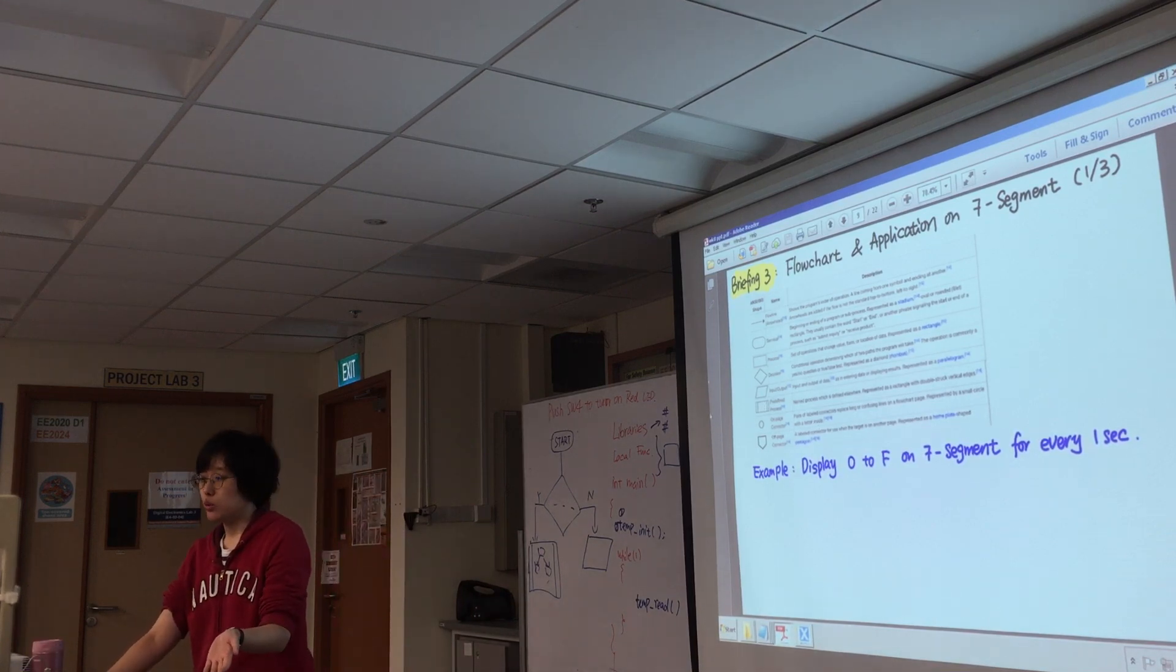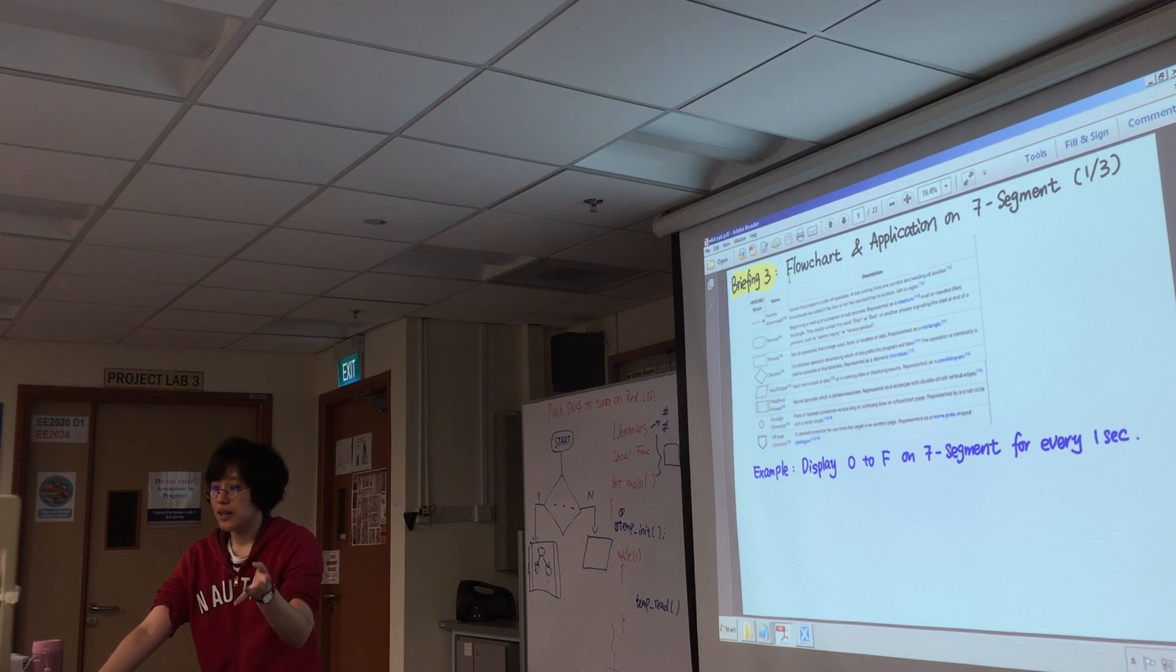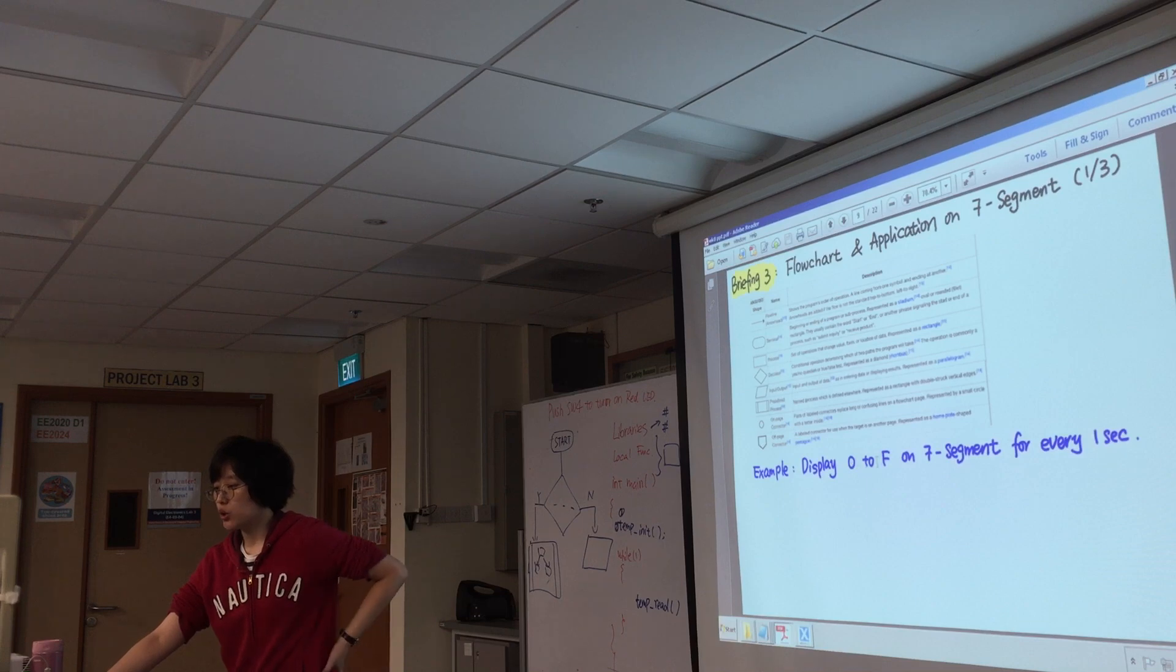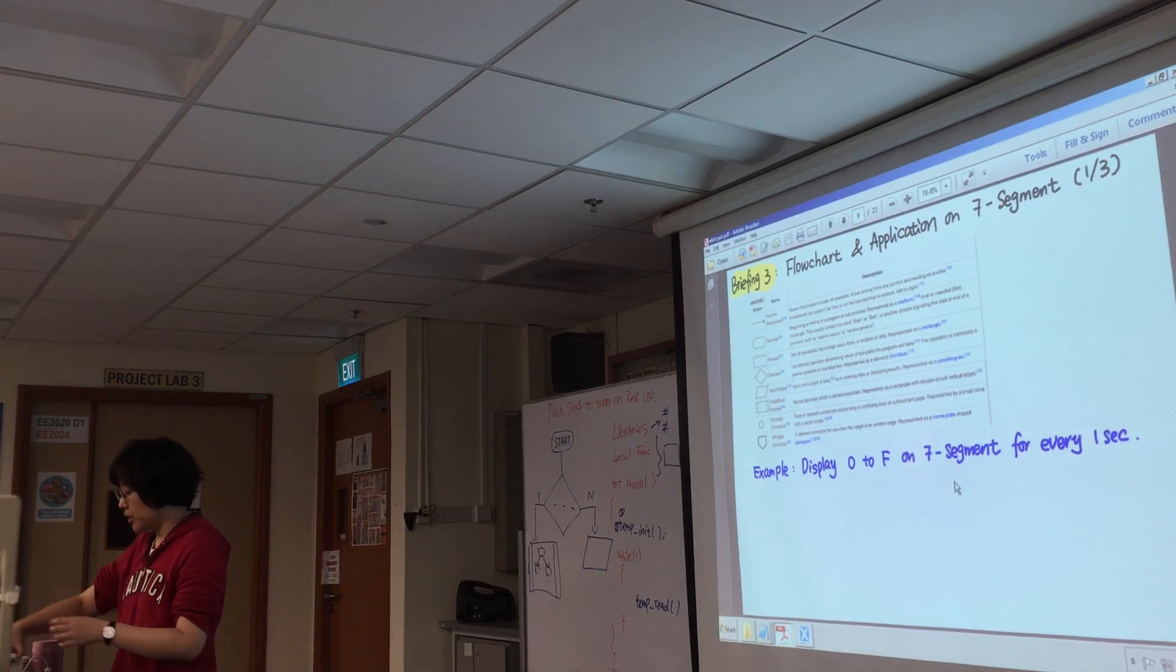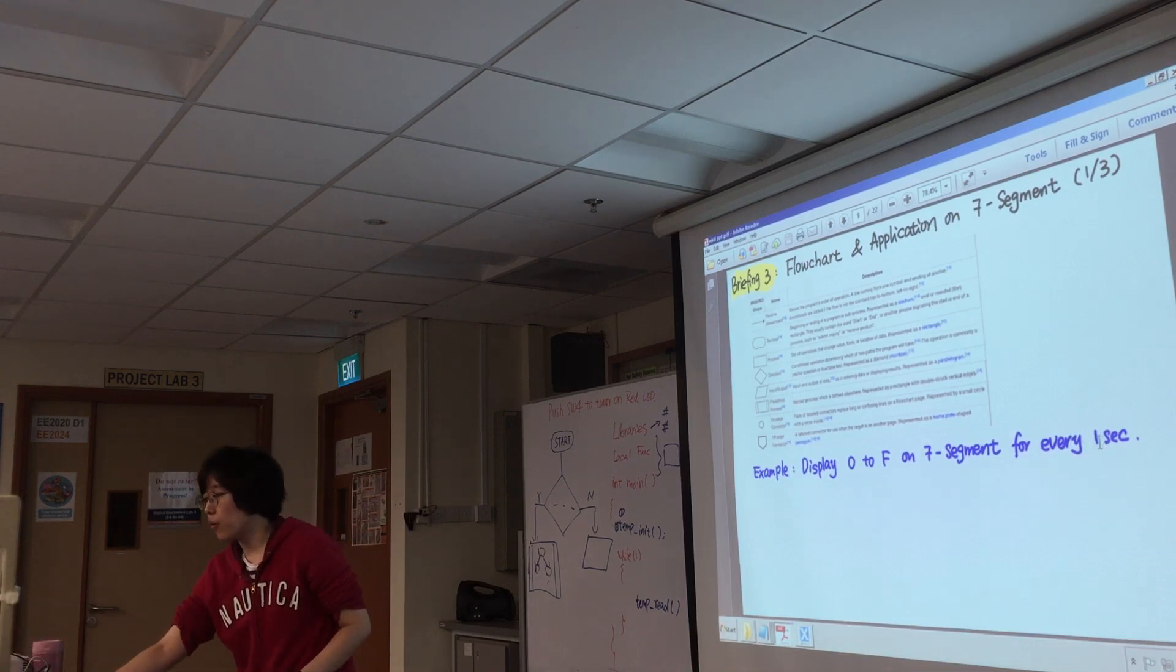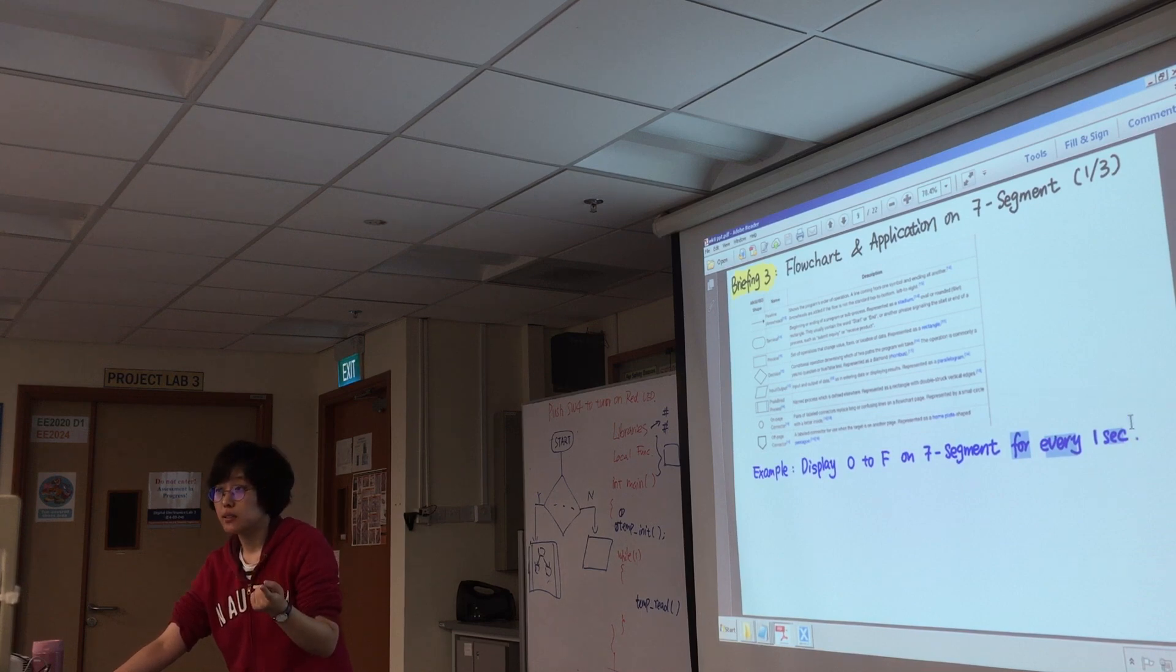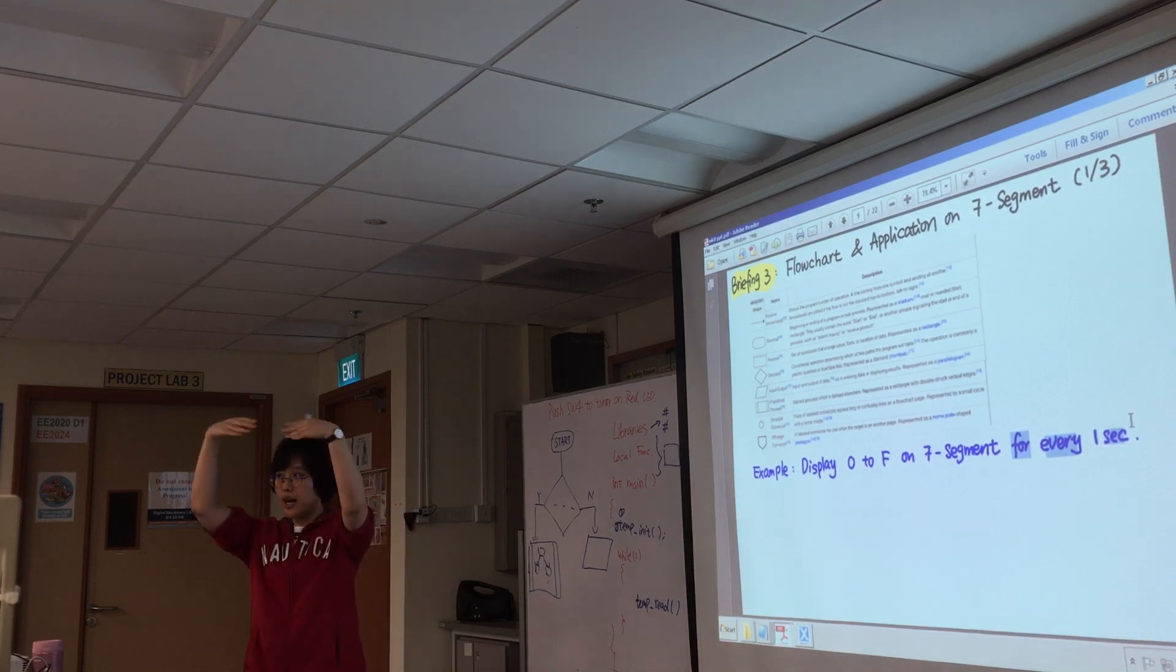And then in your report of assignment two, you will have your flow chart. And then, my third exercise, my plan is actually to display the seven segments from zero to F for every one second. If you have read the assignment tool, basically this is part of the assignment tool. You need to update your seven segments. You all know what is seven segments. So I need to run this every one second. So after the briefing, now you should know how to get one second. Just now you know how to get one millisecond. So you see you are building up.